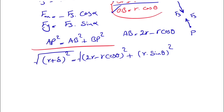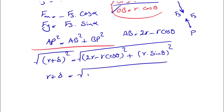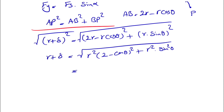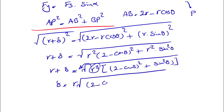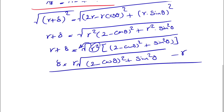Taking the square root of each side: r + δ = √[(2r − r·cos(θ))² + (r·sin(θ))²]. We can factor out r² inside the square root, giving r + δ = r·√[(2 − cos(θ))² + sin²(θ)]. Therefore, delta equals r times the square root of (2 − cos(θ))² + sin²(θ), minus r. This was the hardest part of the question.